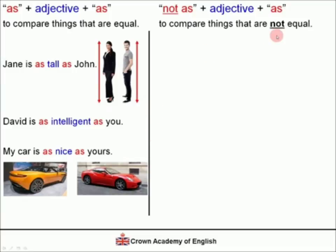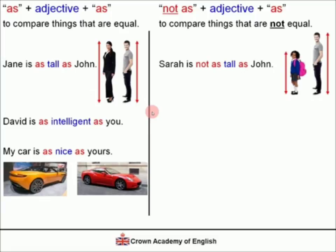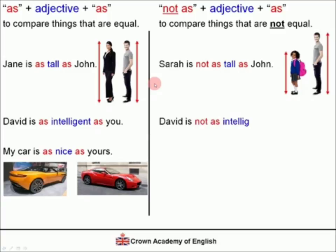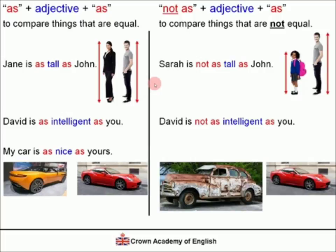We are comparing things that are not equal. Sarah is not as tall as John — this is another way of saying Sarah is shorter than John, or John is taller than Sarah. David is not as intelligent as you. And unfortunately, my car is not as nice as yours.